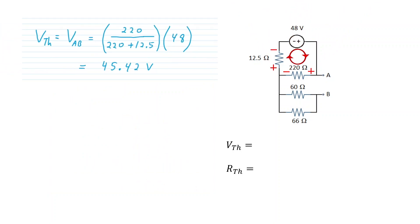For the Thevenin volts, with an open output there's only one pathway — one series loop for current to flow. As a series loop, we can get the volts on the 220 ohm resistance using the voltage divider formula. So 220 over the sum of the two resistors in series times the 48 volts gives 45.42 volts.